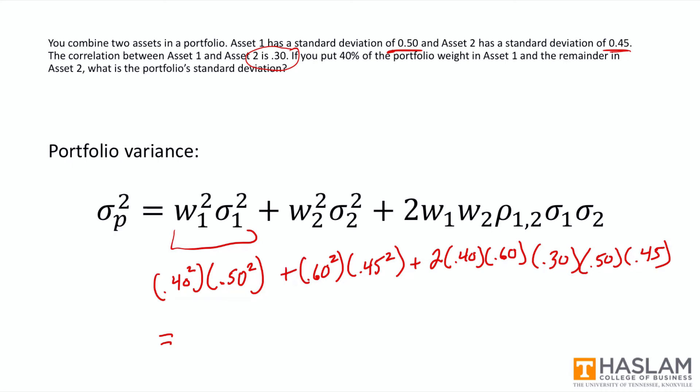This equals 0.1453. Now remember, that's the variance. So what's the standard deviation? Standard deviation is just the square root of this number, and that's 0.3812.